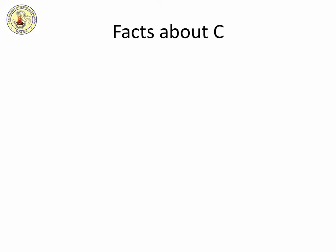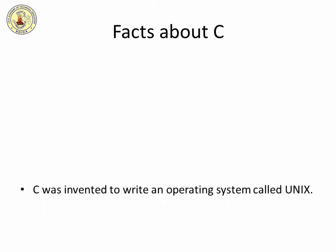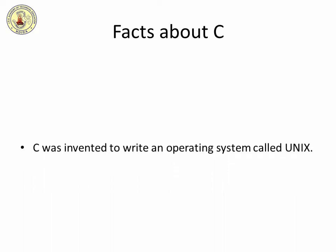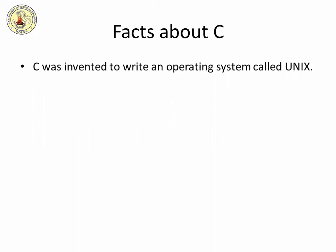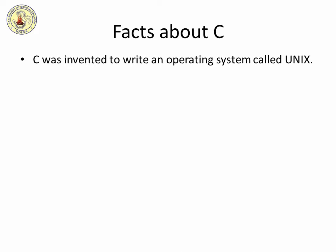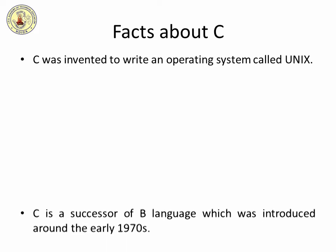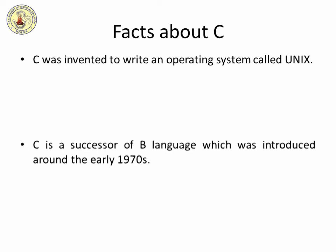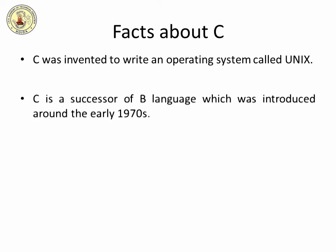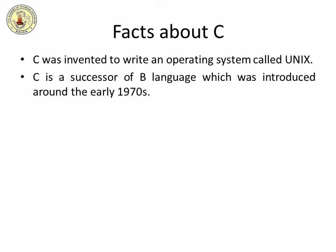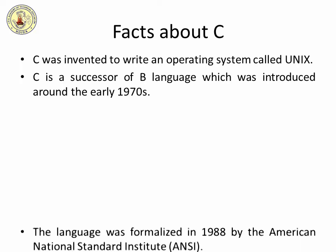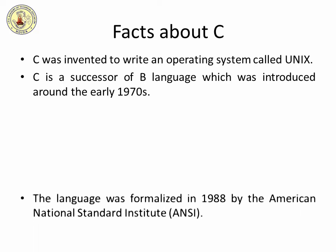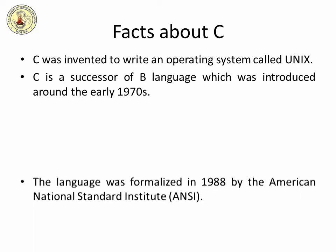There are a lot of facts you must know about this language. First, C was invented to write an operating system called Unix. Second, C is a successor of B language which was introduced around the early 1970s. Third, the language was formalized in 1988 by the American National Standard Institute, ANSI.